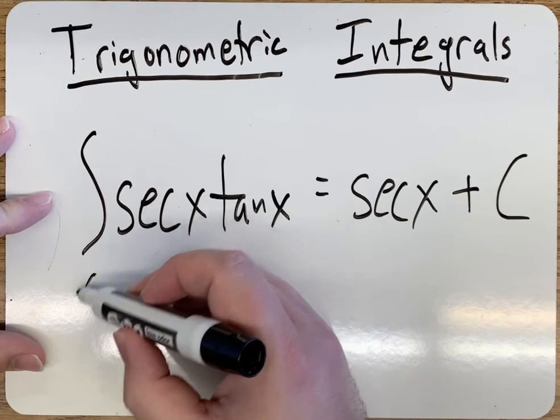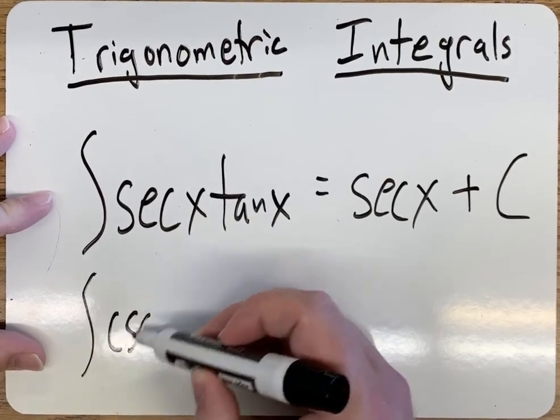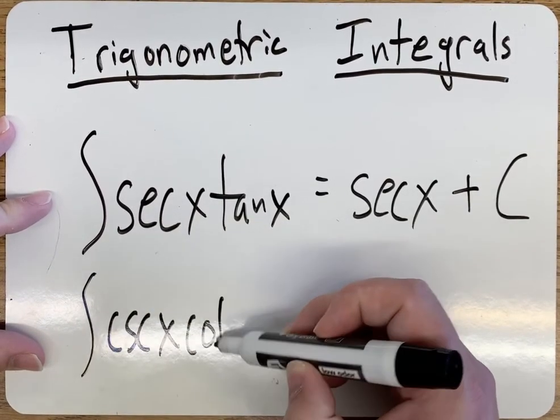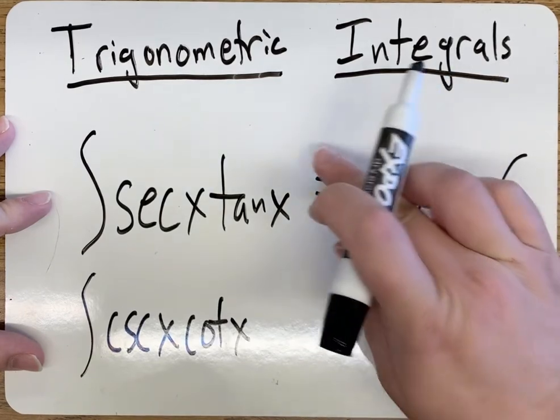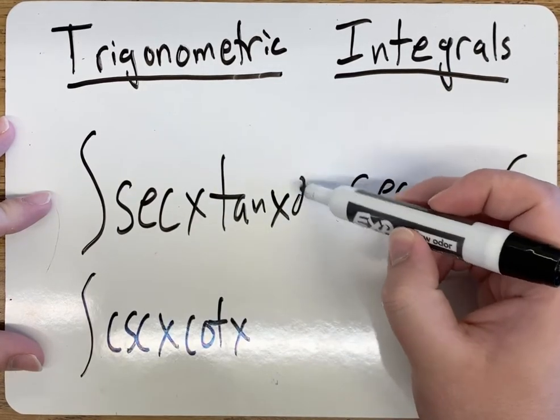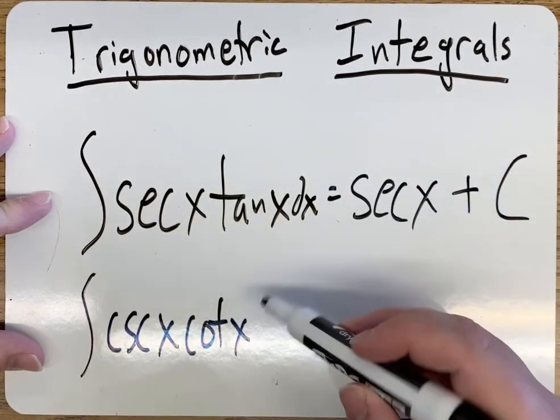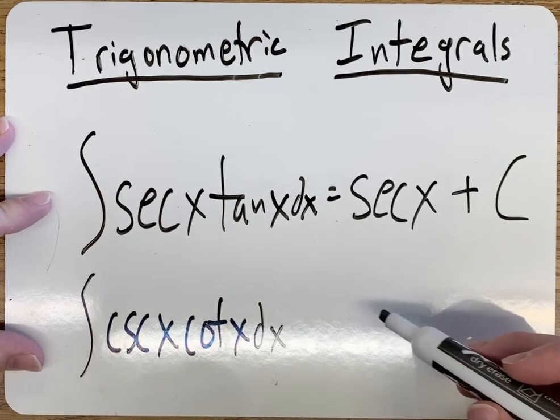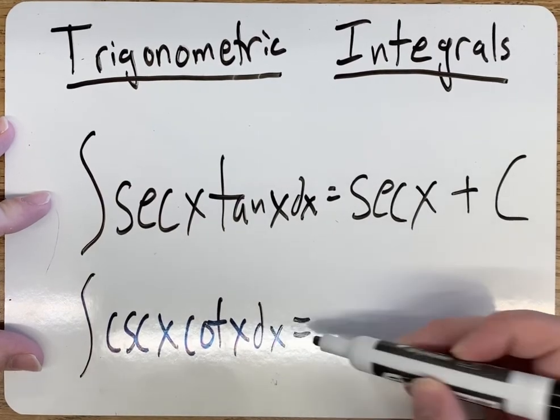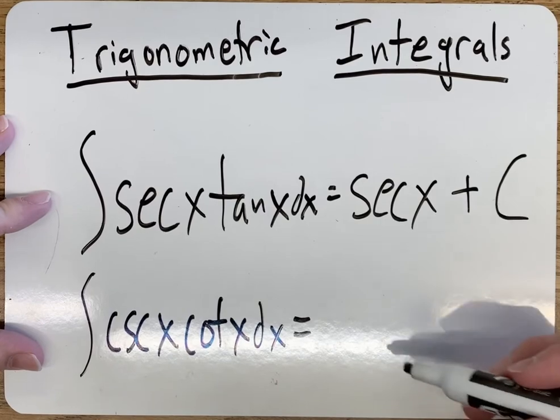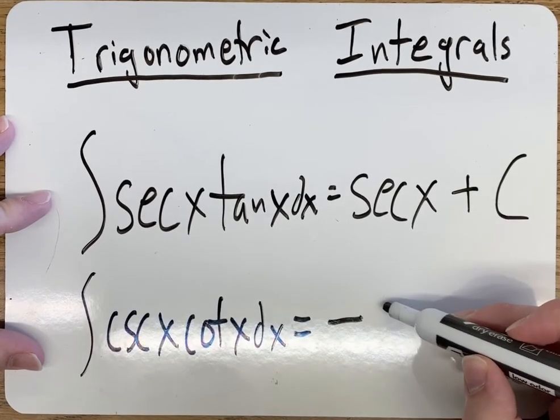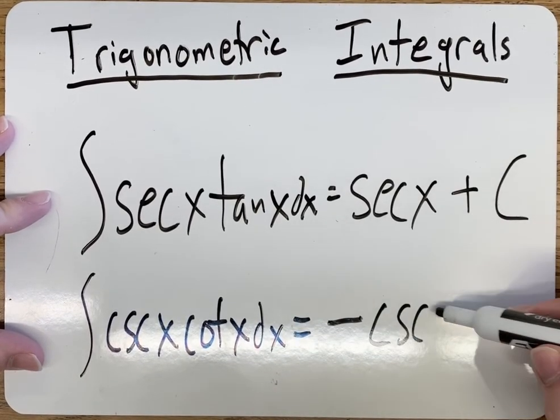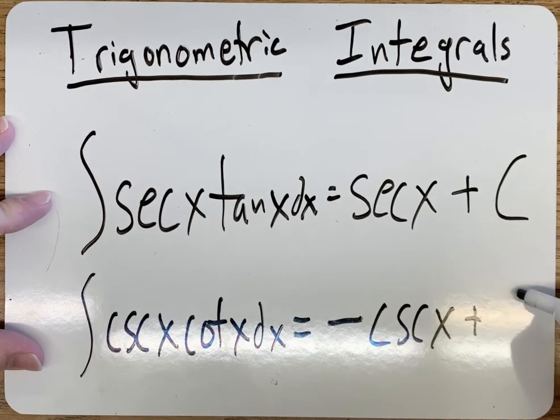Okay, and with that, you also have your cosecant cotangent x dx. Never forget your plus c. All right, in this case, we need that negative sign, negative cosecant x plus c.